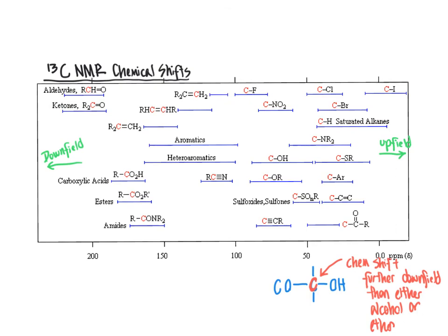In summary, carbon chemical shifts contrast with proton chemical shifts in that they span a broader range — typically 0 to about 200 or 220 ppm. But similarly to proton chemical shifts, they give us information about the environment a particular carbon atom is located in: what types of atoms are surrounding it to either shield it with high electron density or deshield it with low electron density due to nearby electron withdrawing groups. We can use that to infer what types of functional groups are present within a molecule.